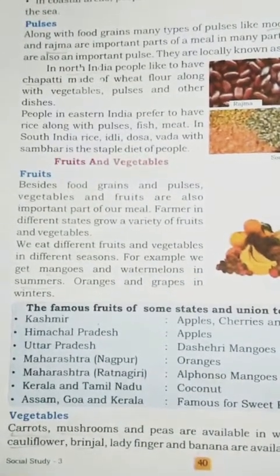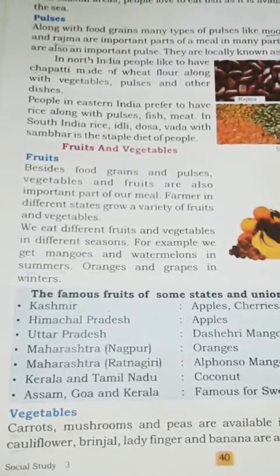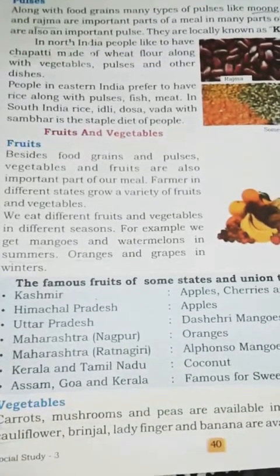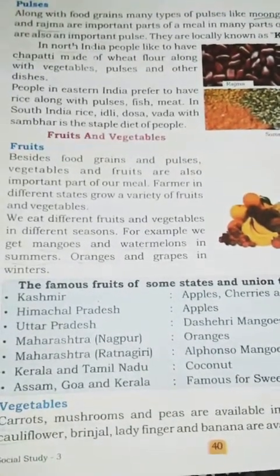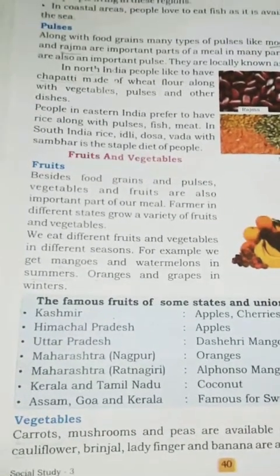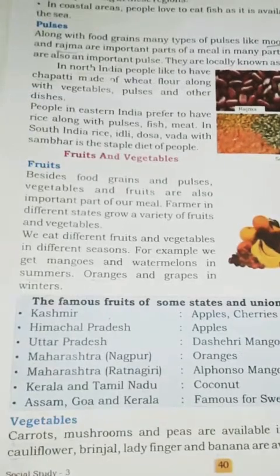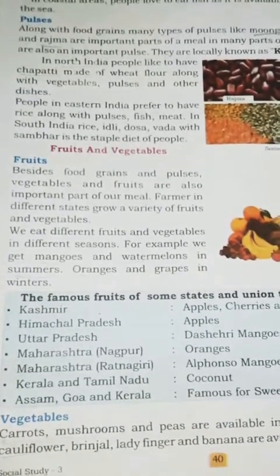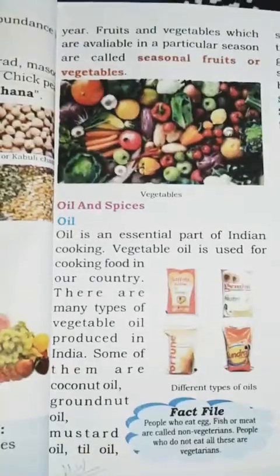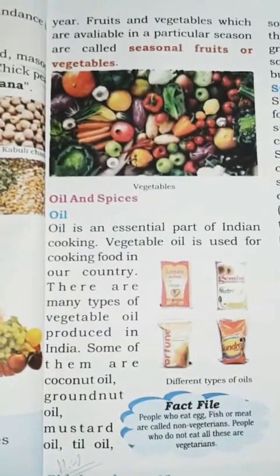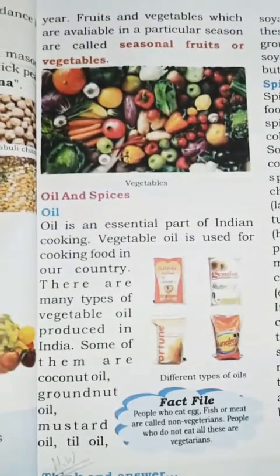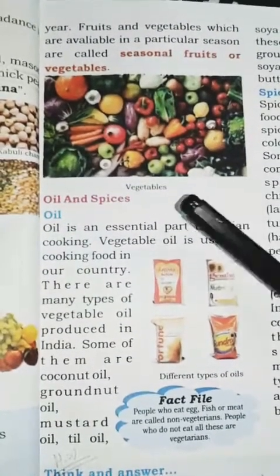Then comes vegetables. Carrots, mushrooms, and peas are available in winters. Onion, potato, cauliflower, brinjal, lady's finger, and banana are available throughout the year. Fruits and vegetables which are available in a particular season are called seasonal fruits or vegetables.